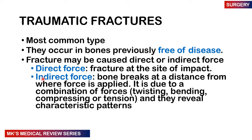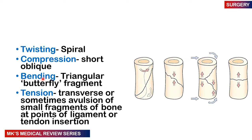Indirect fractures are often due to a combination of forces: twisting, bending, compression, and tension. These may reveal certain radiological patterns — for example, a twisting force may lead to a spiral fracture; compression may give a short oblique line; bending gives a triangular butterfly fragment; tension can cause a transverse fracture or even an avulsion of small bone fragments at ligament and tendon insertion points.